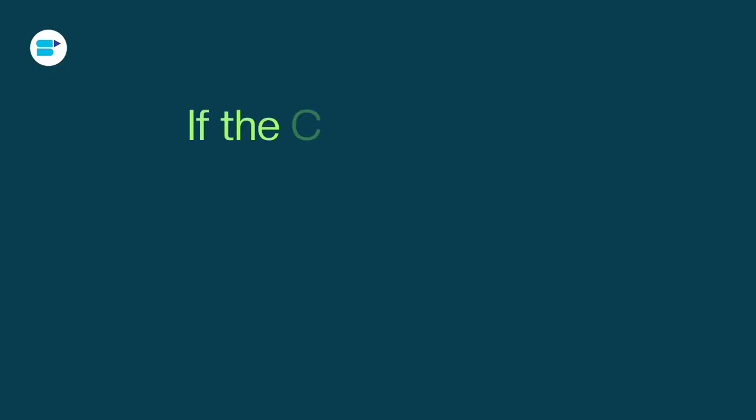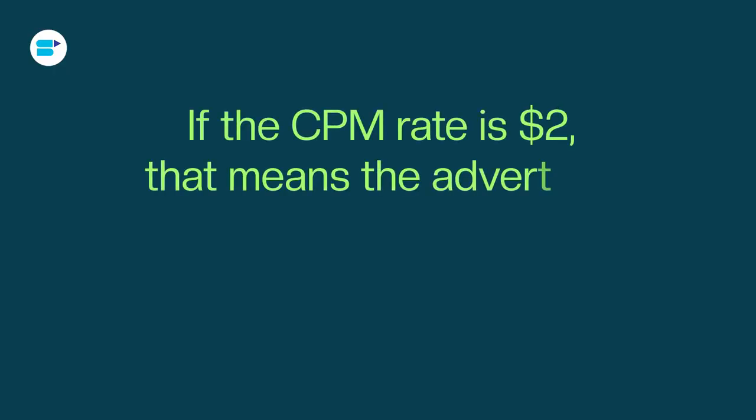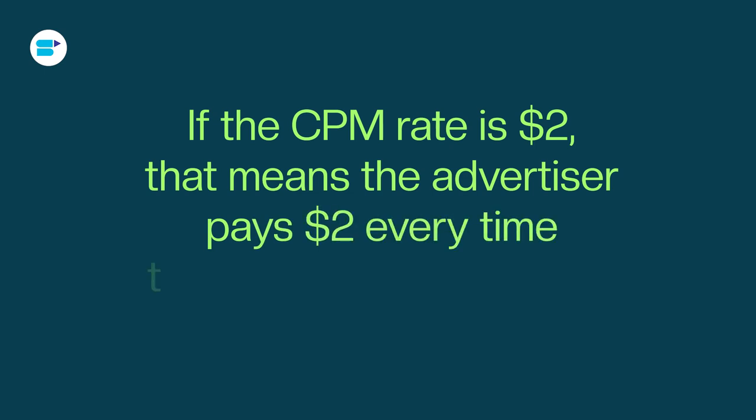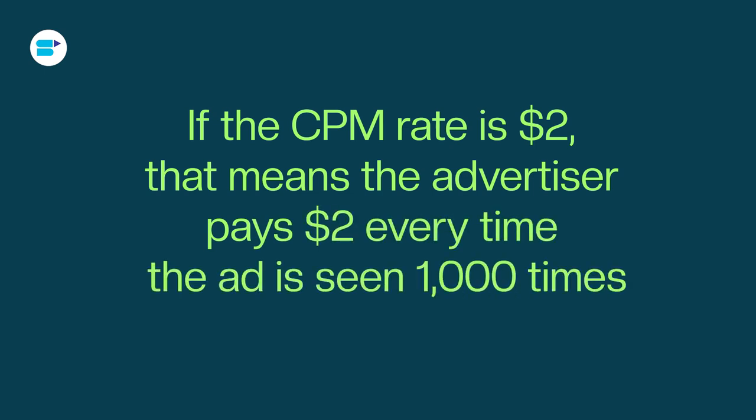Sometimes sellers confuse CPM and VCPM, but they are a bit different. CPM, or Cost Per Thousand Impressions, is often discussed when talking about the price of an ad — it covers all the ads shown on a website. When you pay based on CPM, you are paying for all the ads that appear on a webpage. For example, if the CPM rate is $2, that means the advertiser pays $2 every time the ad is seen 1,000 times, whether or not the ad is actually visible on screen.